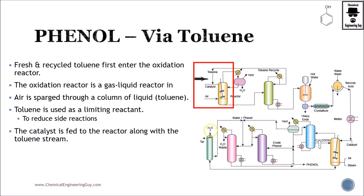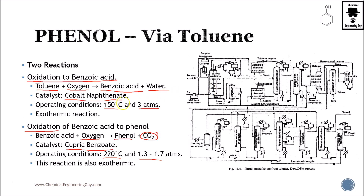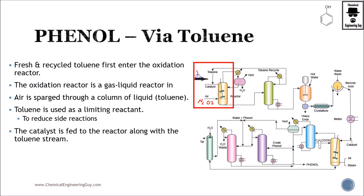First, we're going to have a fresh feed of air — technically nitrogen gas and oxygen gas — along with the cobalt naphtinate catalyst and a fresh feed of toluene. We also have recycled toluene from this tower, giving us treated toluene plus fresh feed toluene. Note that this is a liquid-gas reaction: the liquid is toluene and the gas is air — technically the oxygen — which is sparged into the vessel, so there are plenty of bubbles.